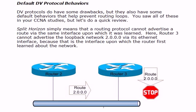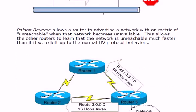Here are some default distance vector protocol behaviors you should have seen in your NA. Split horizon — and I'm putting emphasis on this because it will mean something a little different to another protocol later in the course — for distance vector protocols, split horizon simply means a routing protocol can't learn about a route on a given interface and then advertise that same route back out that same interface.